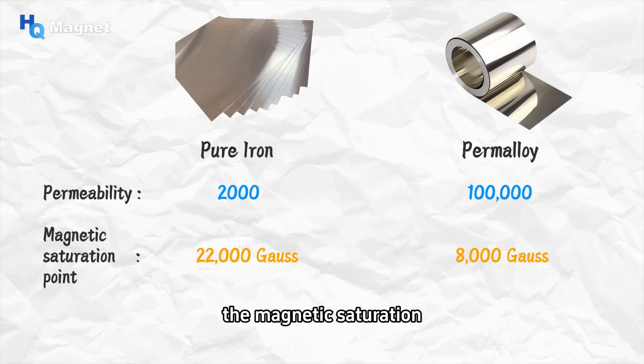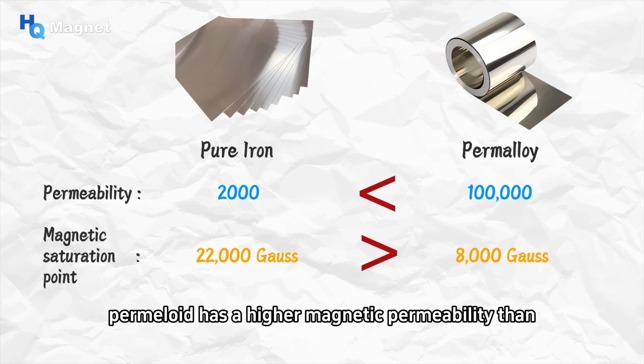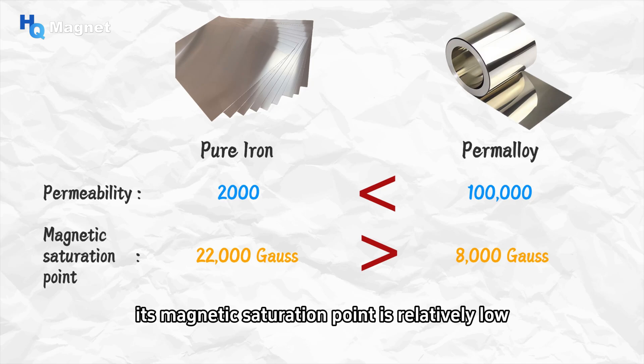The magnetic saturation points of different materials are different. For example, although permalloy has a higher magnetic permeability than pure iron, its magnetic saturation point is relatively low.